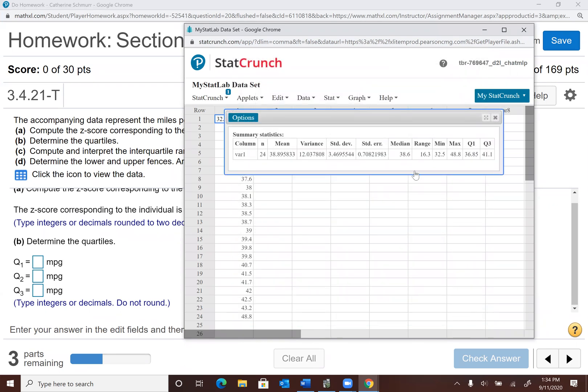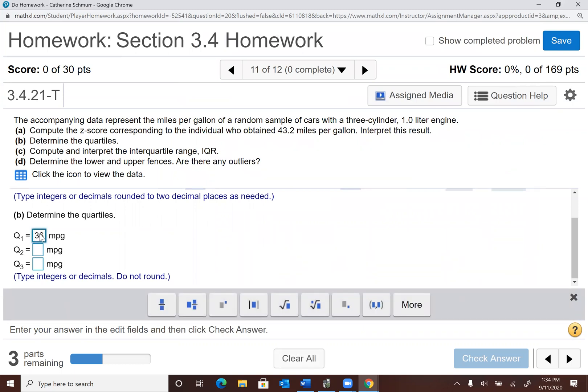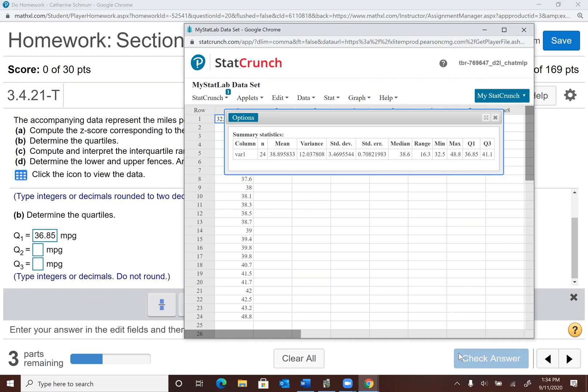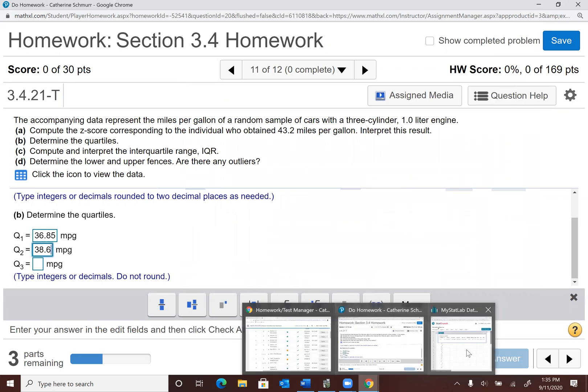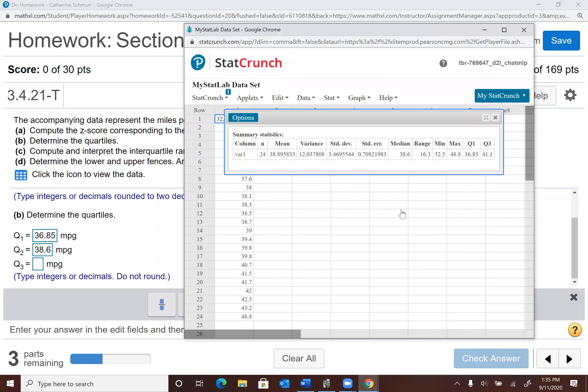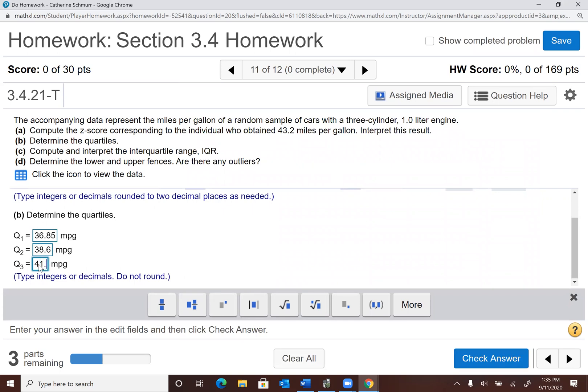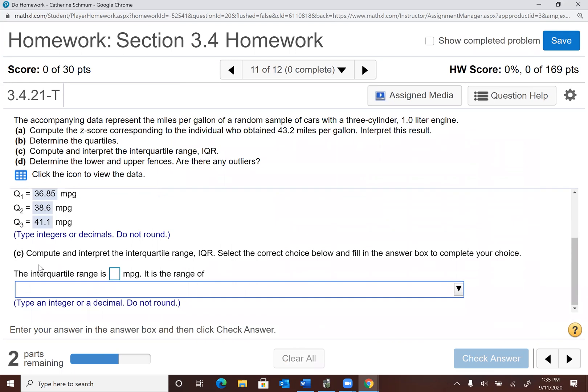And what this shows me is it shows me, you'll see over here on the right, Q1 is 36.85, Q3 is 41.1, and then Q2 is the median. So anytime I'm asked for Q2, that's always going to be the median number. So this says do not round. So I'm going to put in the 36.85. For Q2, I look back at the median, 38.6. And for Q3, it's listed right here at the end, 41.1. Okay, so I've got my quartiles.